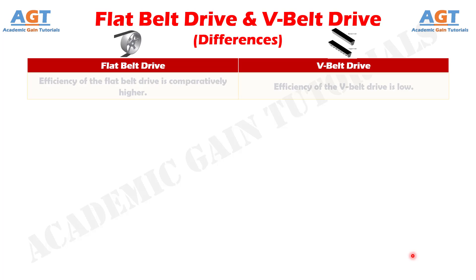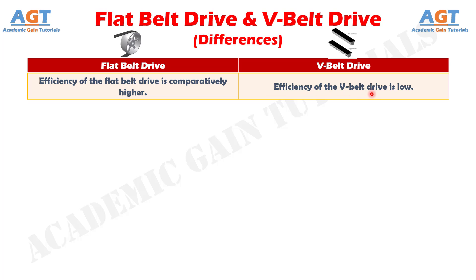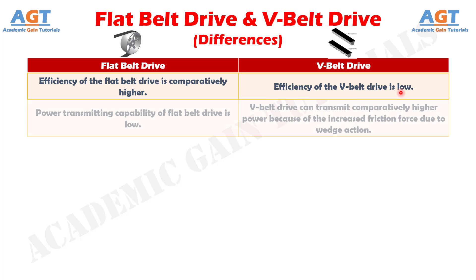Number 7: efficiency of the flat belt drive is comparatively higher, whereas efficiency of the V-belt drive is low. Number 8: power transmitting capability of flat belt drive is low, whereas V-belt drive can transmit comparatively higher power because of the increased friction force due to wedge action.